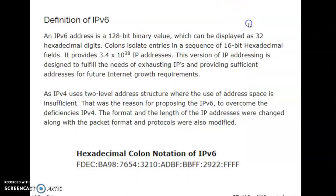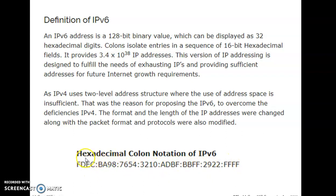An IPv6 address is of 128-bit binary value which can be displayed as 32 hexadecimal digits. One should remember the IPv6 address length is 128 bits, whereas the length for IPv4 was 32 bits. The colon separates entries in a sequence of 16-bit hexadecimal fields. IPv6 address is denoted in hexadecimal colon notation, which is opposite to IPv4 where addresses were noted in dotted decimal fashion.